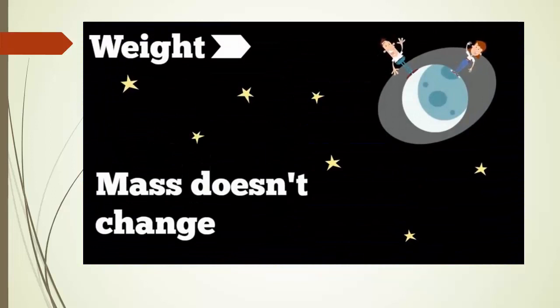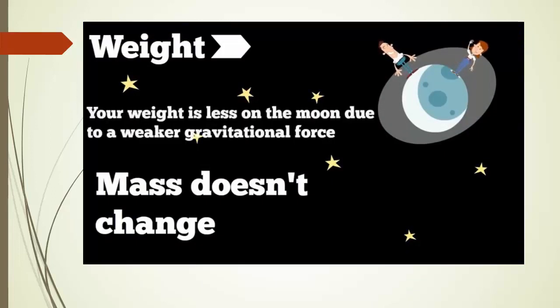Now moving on, weight's SI unit is Newton and mass SI unit is kilogram. For example, if we say 1 Newton, 1 Newton will be equal to 1 kilogram being accelerated with an acceleration of 1 meter per second square. So this is the basic difference between mass and weight.